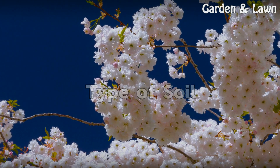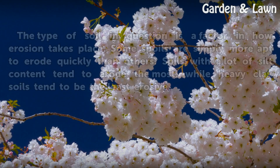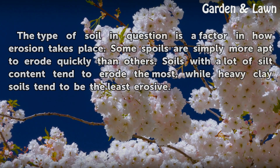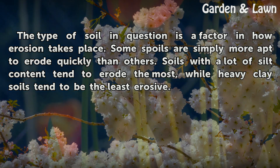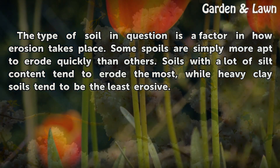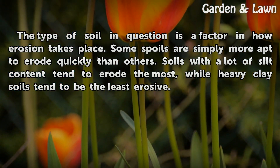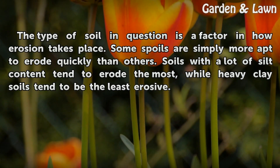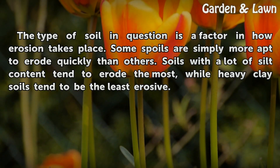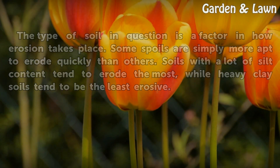Type of Soil. The type of soil in question is a factor in how erosion takes place. Some soils are simply more apt to erode quickly than others. Soils with a lot of silt content tend to erode the most, while heavy clay soils tend to be the least erosive.